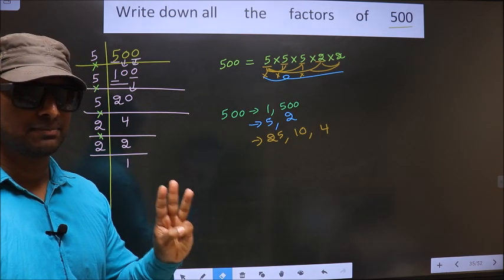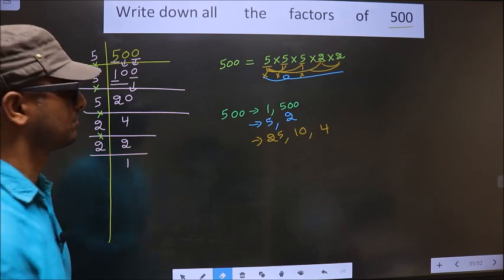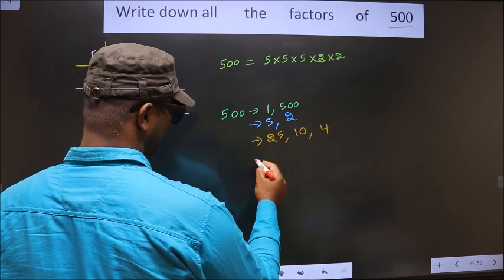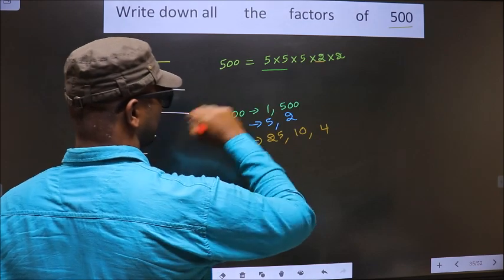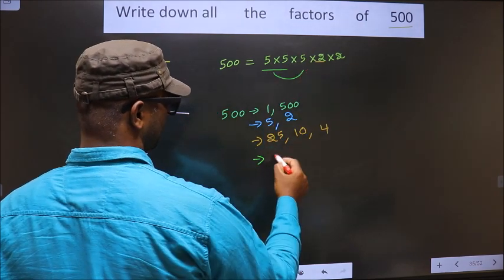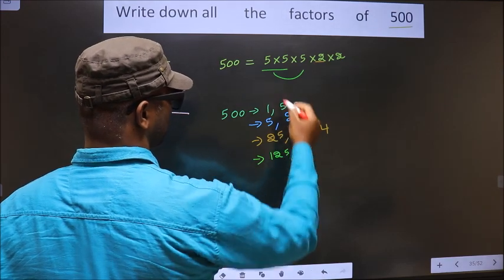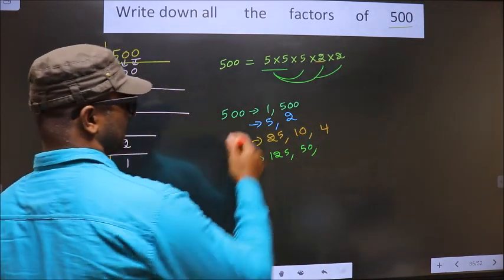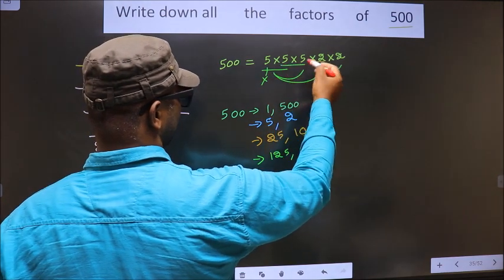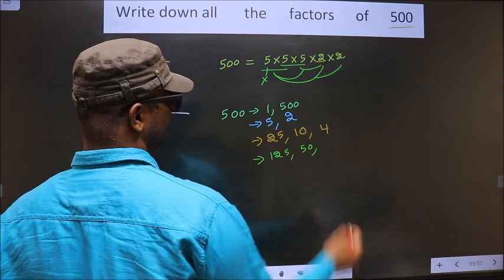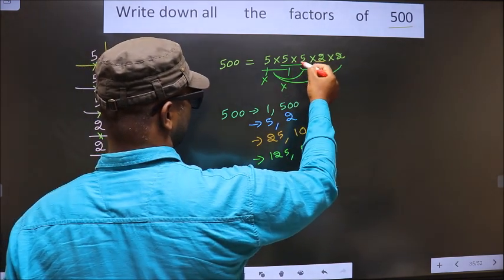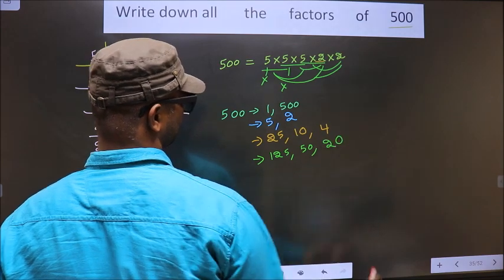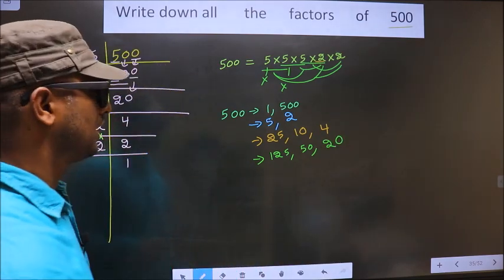Now take combinations of 3 numbers. Fix 5×5=25, combine with 5 to get 125. Combine 25 with 2 to get 50. Taking the other pair of 5s with 2 also gives 50. Now take 5×2=10 and combine with another 2 to get 20. No other combination is possible.